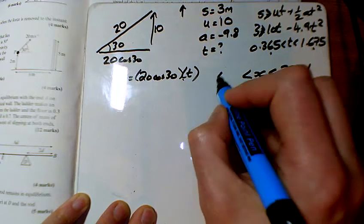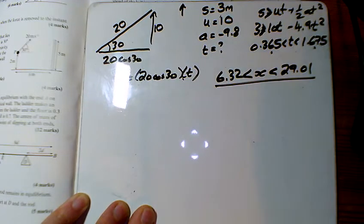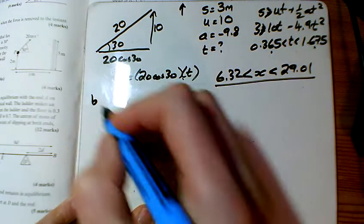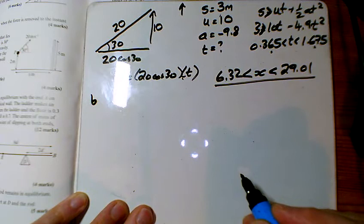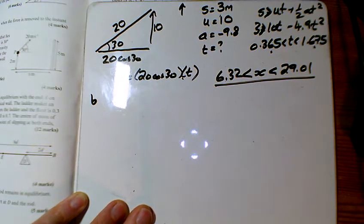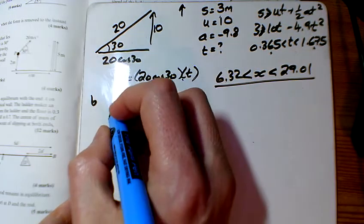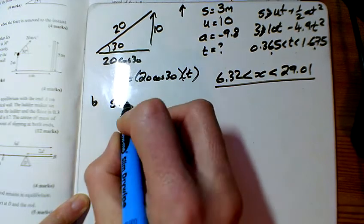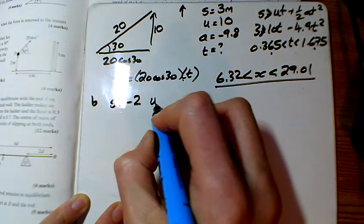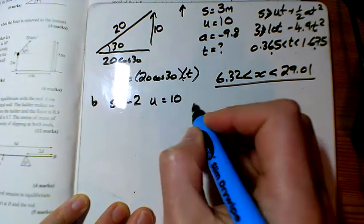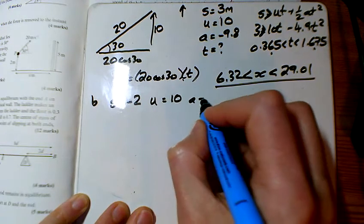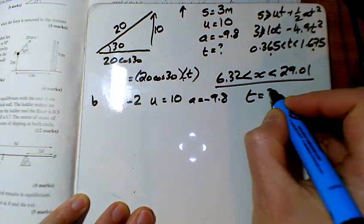And for part b, we want to know when it hits the ground. So I think the first thing I'm going to do is figure out the time when it hits the ground. Similar things again here. This time I've got s is minus 2 because I want it to go down 2 meters and hit the ground. U is still 10, everything else is the same. So a is minus 9.8, and t is what I'm trying to find out.